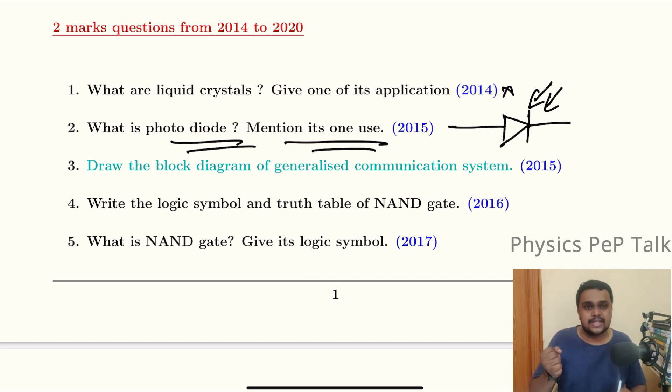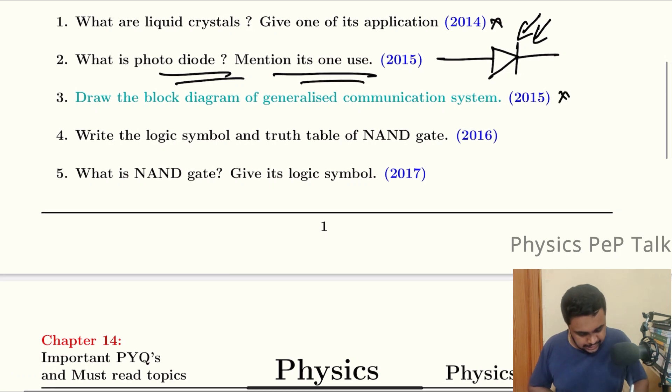This is one mark. Uses of photodiode is switching circuits, light sensitive sensors in cameras. There are numerous uses. This is the deleted portion.